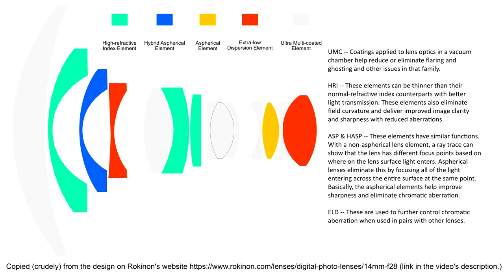High refractive index elements are those with a refractive index significantly greater than air. The specific numbers didn't mean much to me and I couldn't find the refractive index for individual elements in this lens, so those numbers don't matter anyway. In a nutshell, high refractive index elements can be thinner than normal counterparts with better light transmission, they eliminate field curvature, and deliver improved image clarity and sharpness with reduced aberrations. That this lens has three of them does a lot to explain why it performs so well.